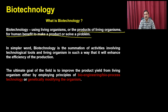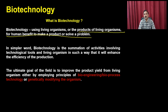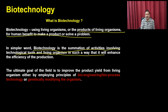In other words, you first study the different aspects of biology for a particular organism — for example, if we are trying to improve the crop of rice, we study the different types of biochemical and metabolic pathways of rice. Utilizing this information, you can develop crops that are resistant to particular pests or diseases. In simpler words, biotechnology is the submission of activities involving technical tools and living organisms to enhance the efficiency of the product.